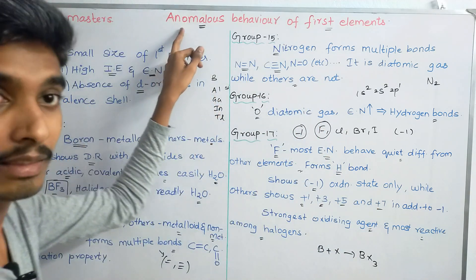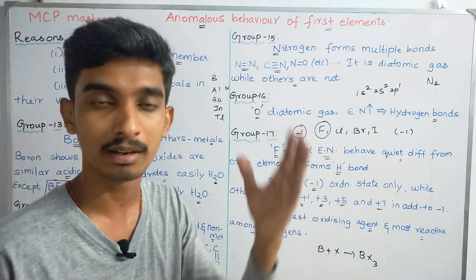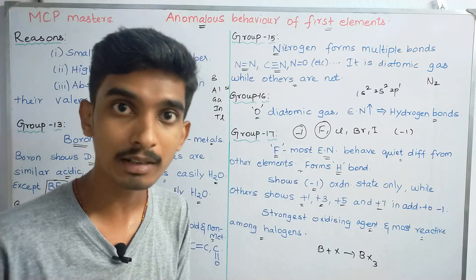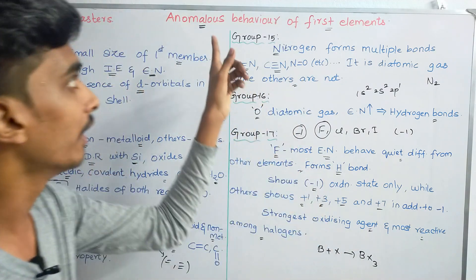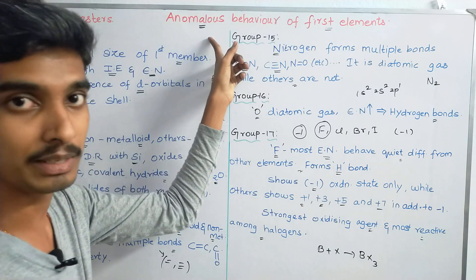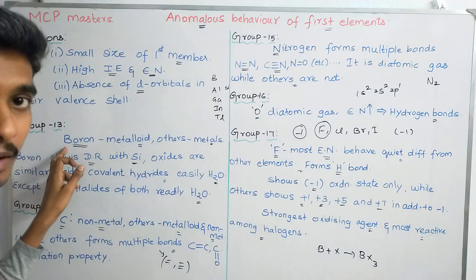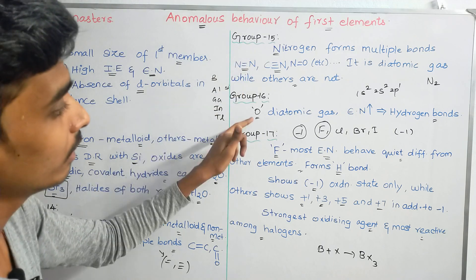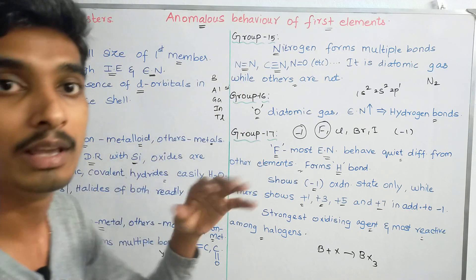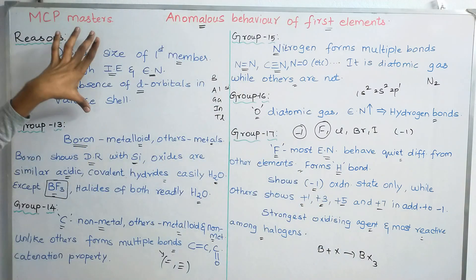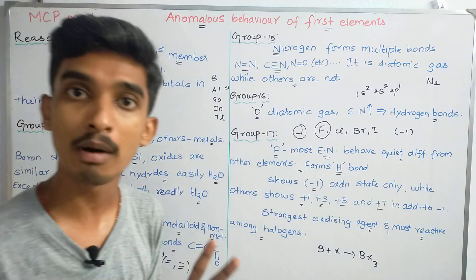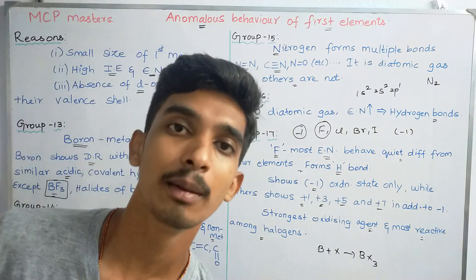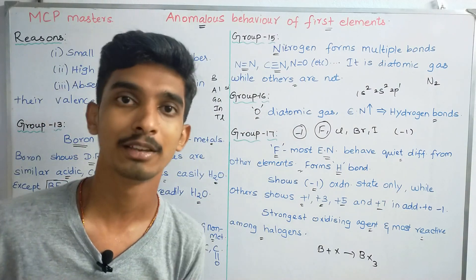So to summarize, anomalous behavior means different behavior of the first element in a group compared to the other elements. Boron, Carbon, Nitrogen, Oxygen, and Fluorine all show anomalous behavior. This topic carries about two marks. In the next video, we will see the inert pair effect. Thank you.